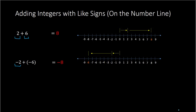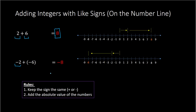We don't want to use the number line every time, but hopefully it helps you visualize what's happening. The rules for adding with the same sign — either both positive or both negative — are: keep the sign the same, and just add the absolute values of the numbers. So 2 plus 6 gives 8 (positive), and negative 2 plus negative 6 gives negative 8 (negative), because we keep the sign and add 2 and 6 to get 8.